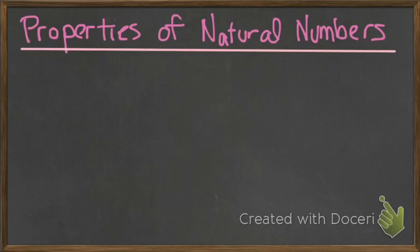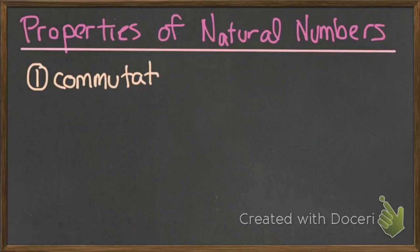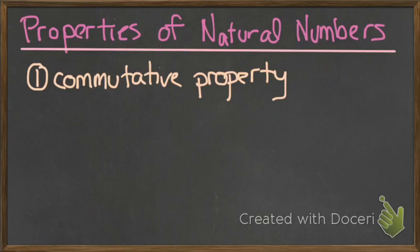The first one that we're going to talk about is called the commutative property. The way that we can remember it is 'commute' is a very good word. When you commute, you go to and from a place, whether it's school or work, and it's always usually the same distance. It might be longer depending on the time of day, but it's always going to be the same distance, no matter whether you go to and from or from and to.